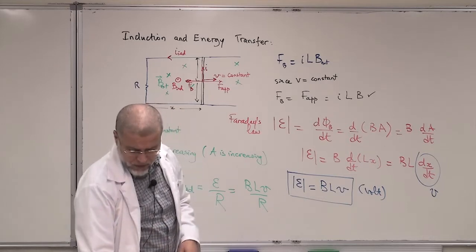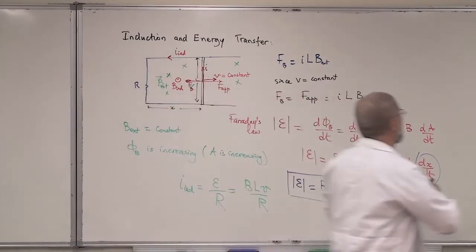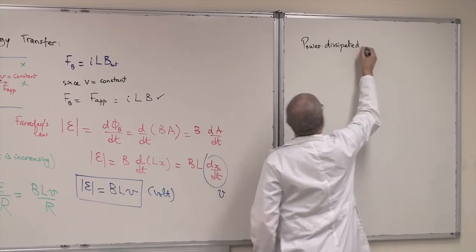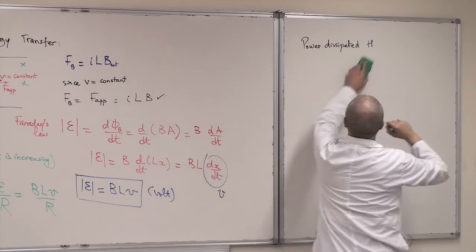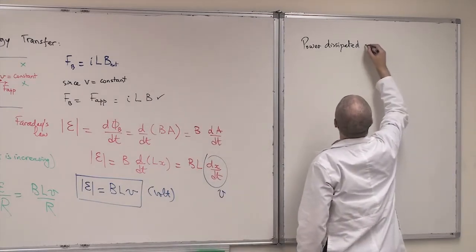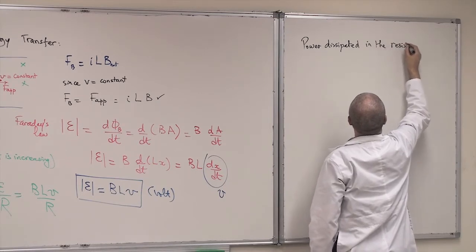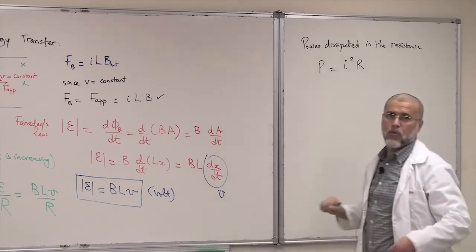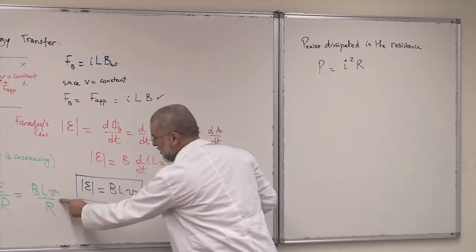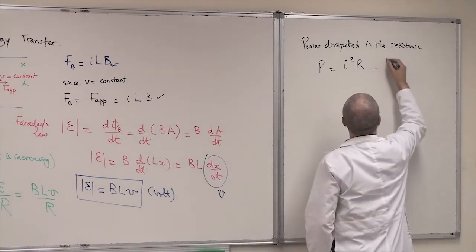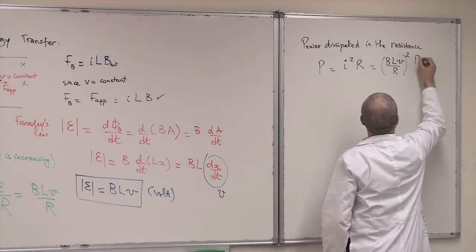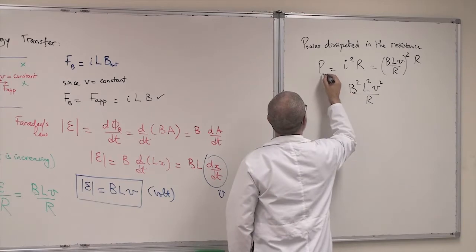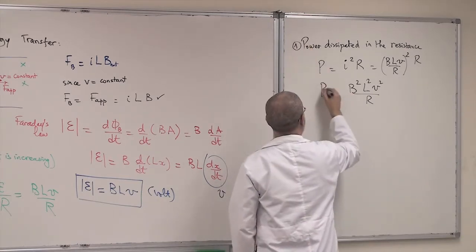I can also find the power dissipated in this circuit — in the resistance — which appears as heat. The power dissipated is I² times R. So substituting I equals B·L·v over R, squaring it and multiplying by R, gives power equals B²·L²·v² over R. That's the power dissipated in the resistance of the wire.